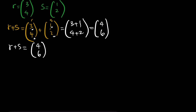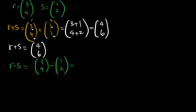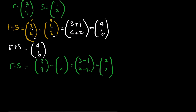For r minus s, we subtract: (3, 4) minus (1, 2). Subtract the x-components: 3 − 1 = 2, and the y-components: 4 − 2 = 2. So r − s = (2, 2).